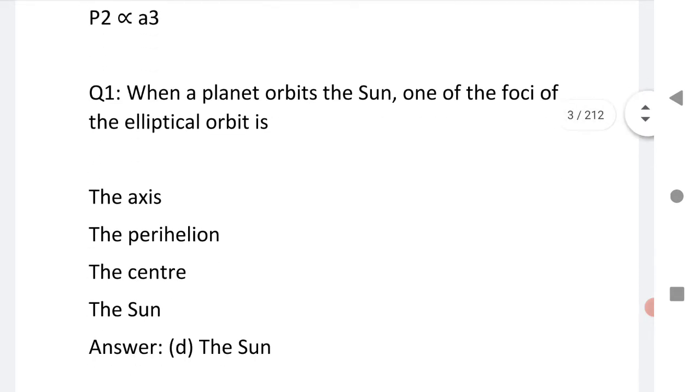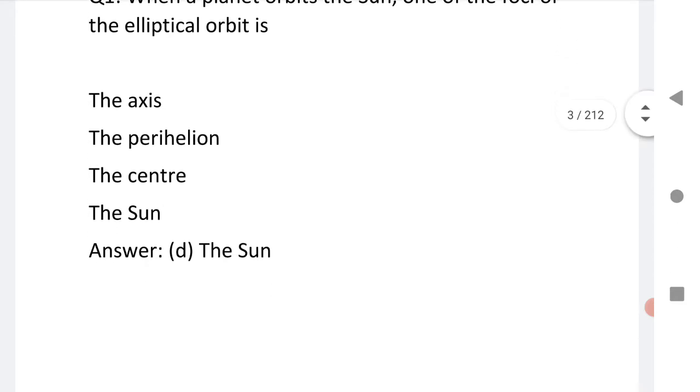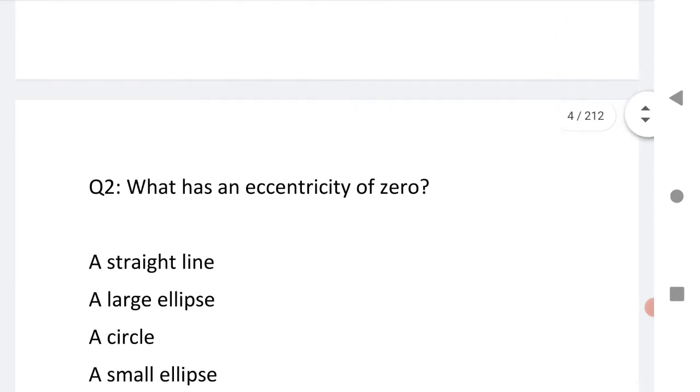Let us see the first MCQ. When a planet orbits the sun, one of the foci of an elliptical orbit is the sun. This is option D.